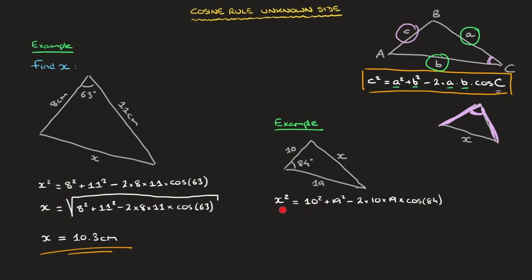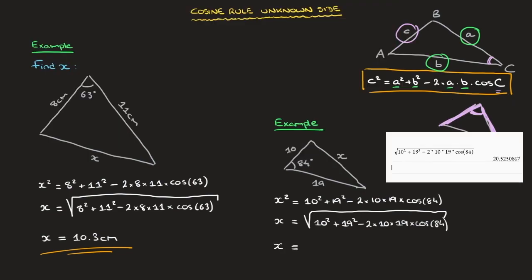Now that we can calculate x squared, to find the value of x we need to take the square root of all of this. In other words, x is equal to the square root of 10 squared plus 19 squared minus 2 times 10 times 19 times cosine of 84. Plugging this into our calculator, I find that x is equal to 20.5, rounded to three significant figures.